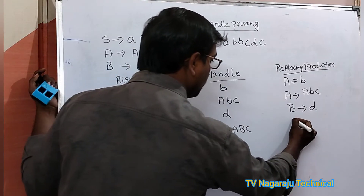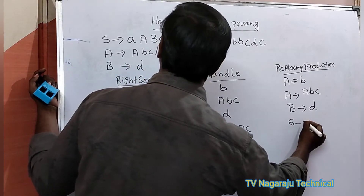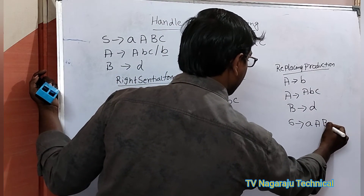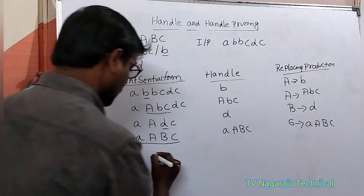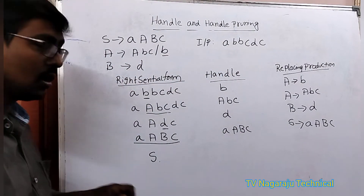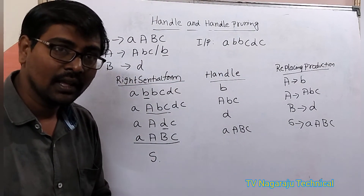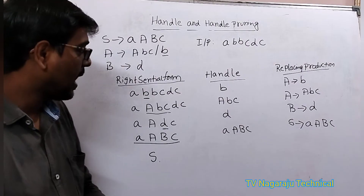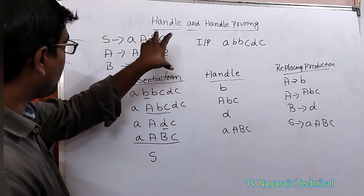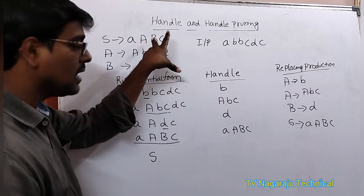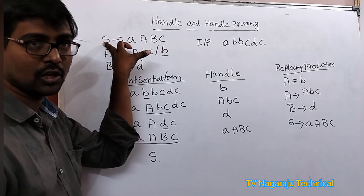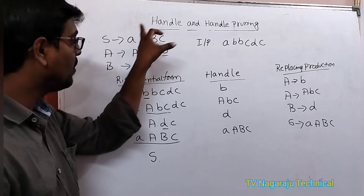The replacing production is S tends to A, A, B, C. Finally we reach S. You got the point. So a handle is any substring that matches on the right-hand side of a production — that is the handle.